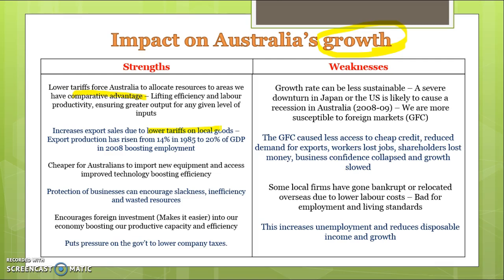Globalization has also made us more efficient because we're no longer protected from other industries. The increase in foreign investment has also helped to boost our productive capacity. Foreigners have invested in Australian companies, providing increased funding which allows Australian companies to expand and invest in new capital, machinery, and technology. That allows us to boost our productive capacity because we have access to those resources and that financial capital.